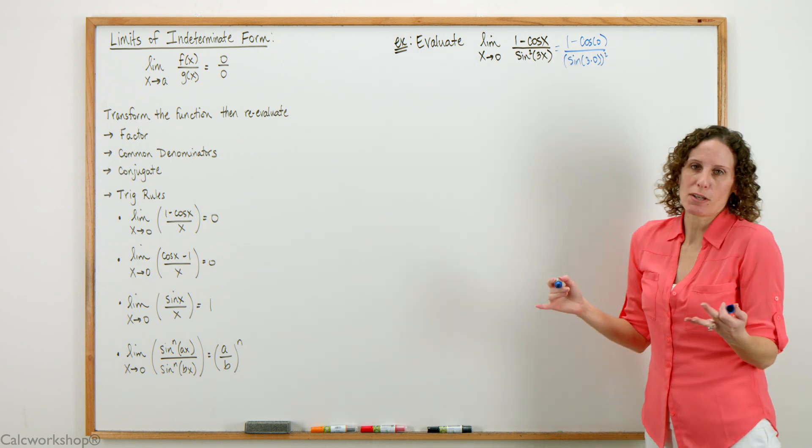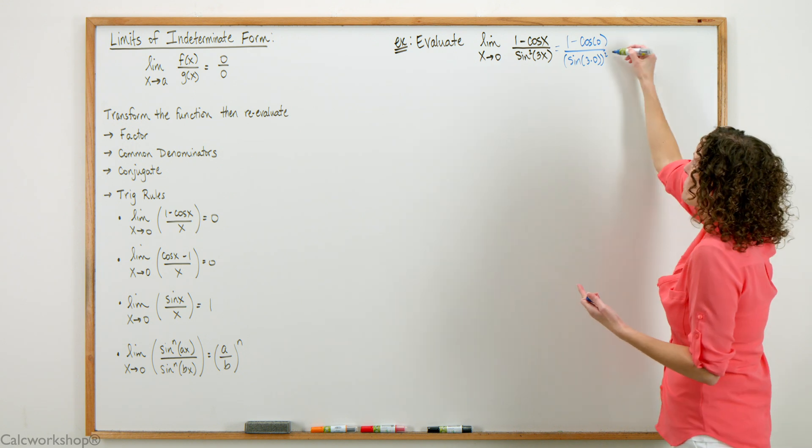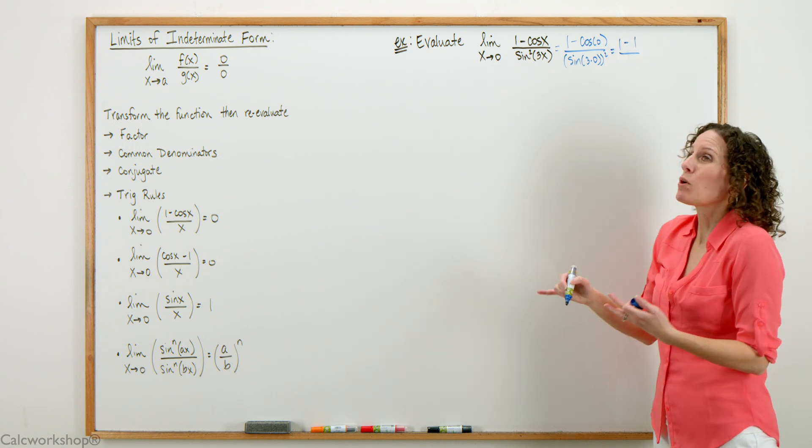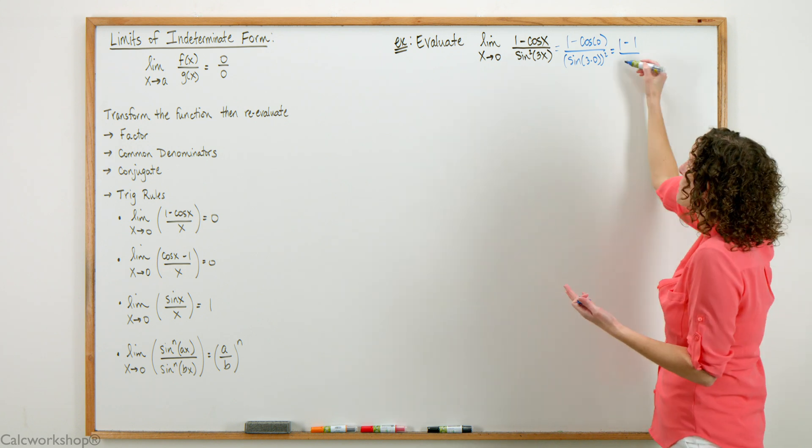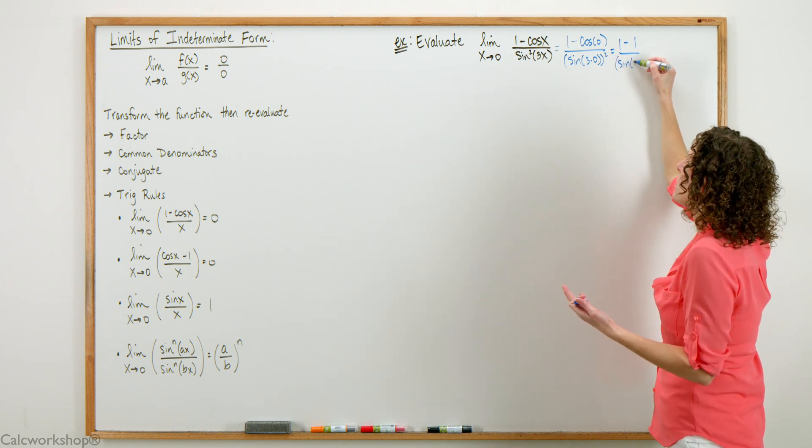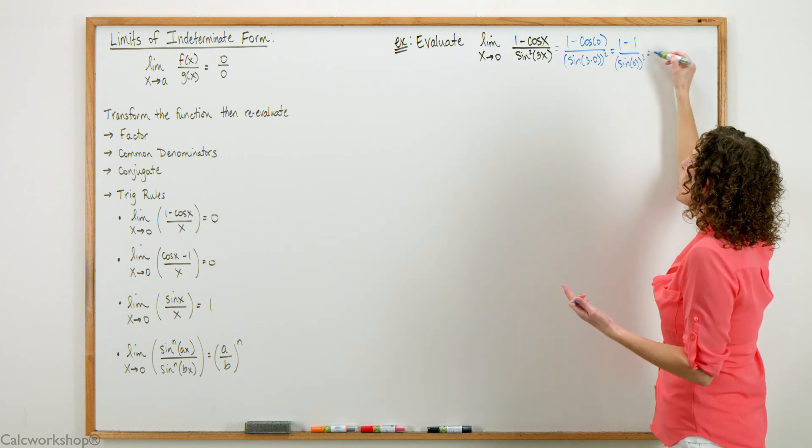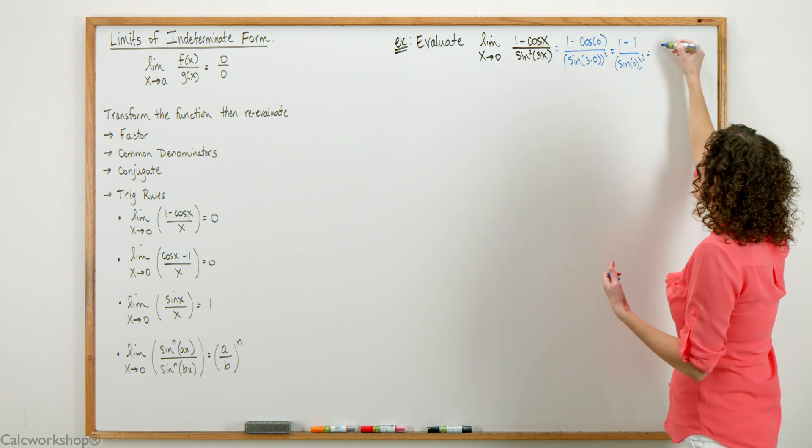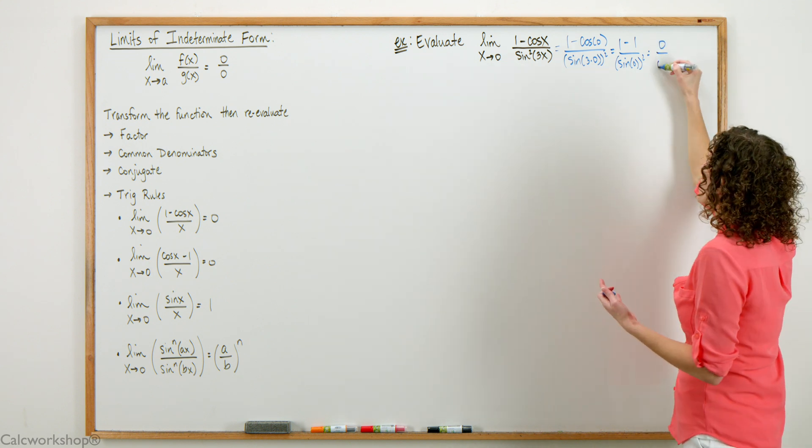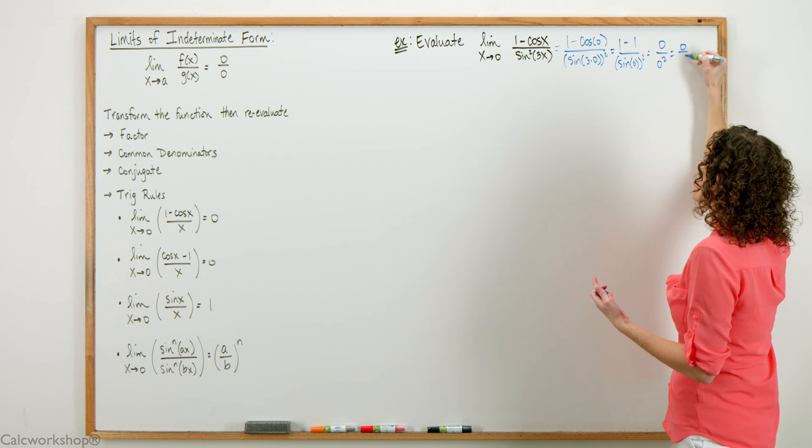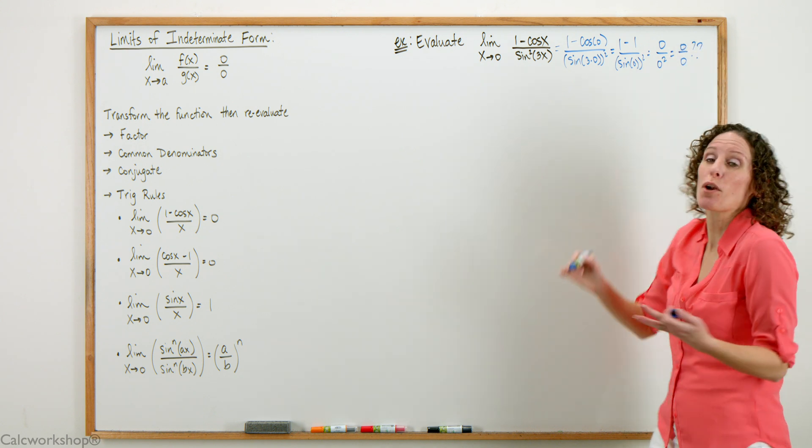The cosine of 0 is 1, so we have 1 minus 1 divided by sine of 0 quantity squared. Well 1 minus 1 is 0 and sine of 0 is 0 and 0 squared is still 0, and we're left with an indeterminate form.